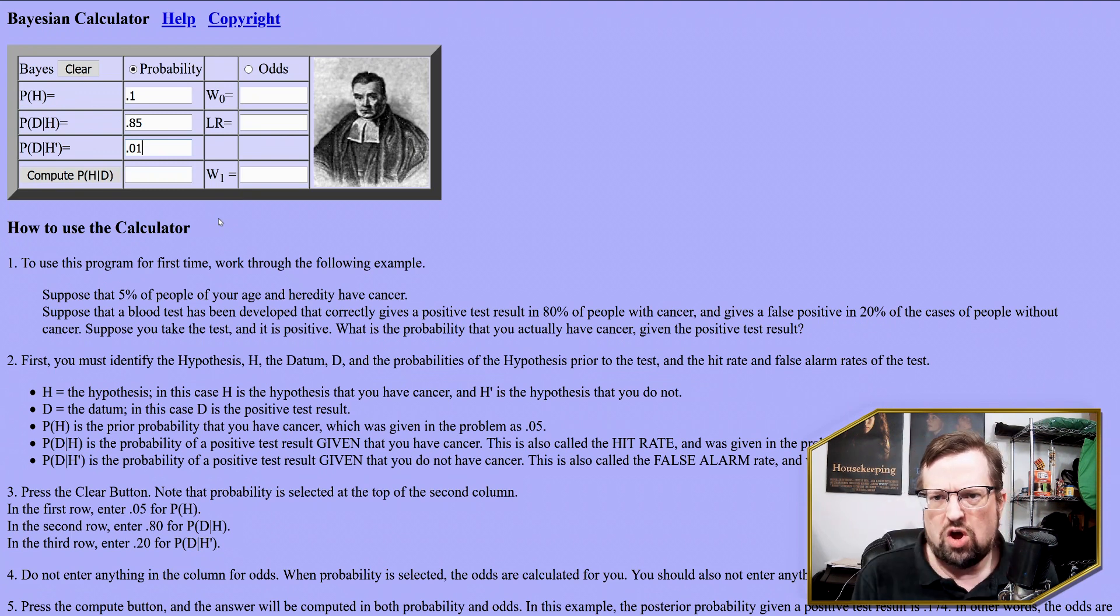They go, oh, well, it's 99% because, you know, we have, because that's how accurate the test is. And then other people say, well, no, if there's this false negative rate, then it's really 15%. Is it 15%? Is it 99%? Is it 50%? What is it?